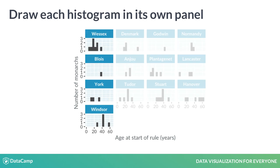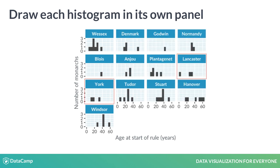This approach still has problems. It's quite easy to compare distributions for panels that are in the same column. You can see that monarchs from the Wessex family were typically much younger when they began ruling than those from the Windsor family, since you can look down the column and see that the Wessex distribution is to the left of Windsor's. By contrast, it's harder to compare distributions between panels that are in different columns. To compare the ages of monarchs in the rival York and Lancaster houses, you have to do a lot of looking back and forth and staring at numbers on the x-axis, which isn't ideal.